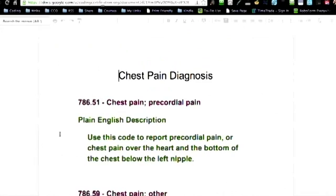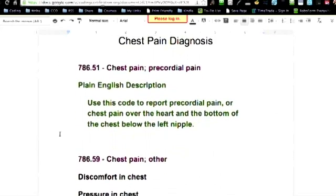Let's go look and see what we've got here. 786.51 is chest pain or precordial pain. In plain English, what does that mean? Now, this is really important because if you don't know what precordial pain is, you're up a creek.